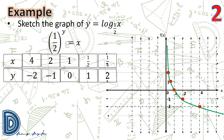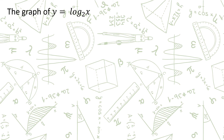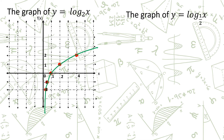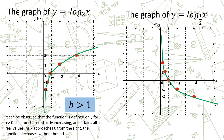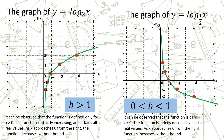Let us compare the graphs of y = log₂(x) and y = log_(1/2)(x). When b > 1, the function is defined only for x > 0, is strictly increasing, and as x approaches 0 from the right, the function decreases without bound. When 0 < b < 1, the function is also defined only for x > 0, but it is strictly decreasing, and as x approaches 0 from the right, the function increases without bound.